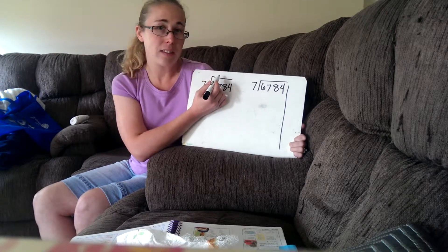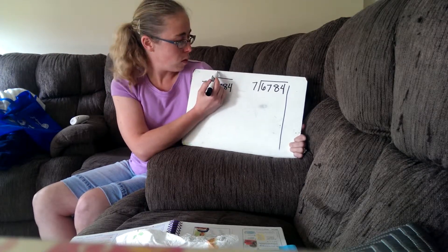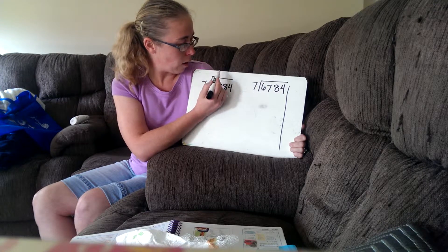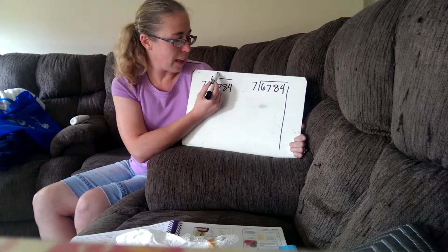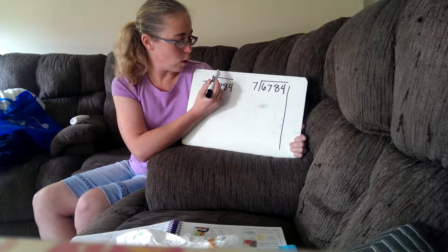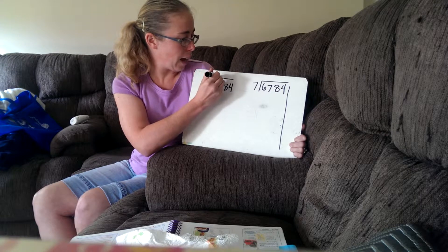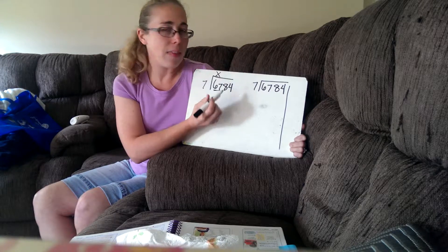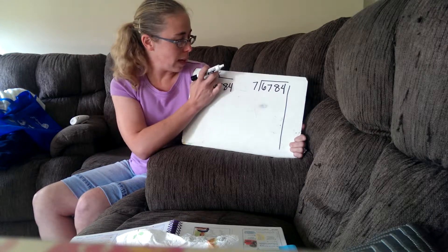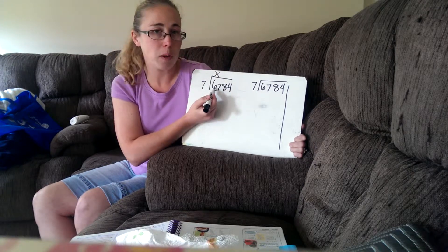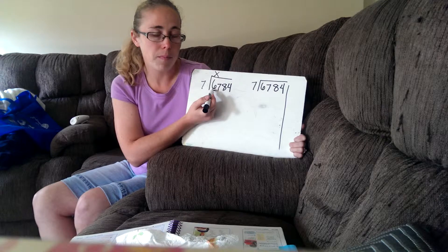If it makes it easier for you to remember, you can put a zero right here as a placeholder. Or you could even just put an x here that reminds you that you tried to divide by six, but it wasn't possible.